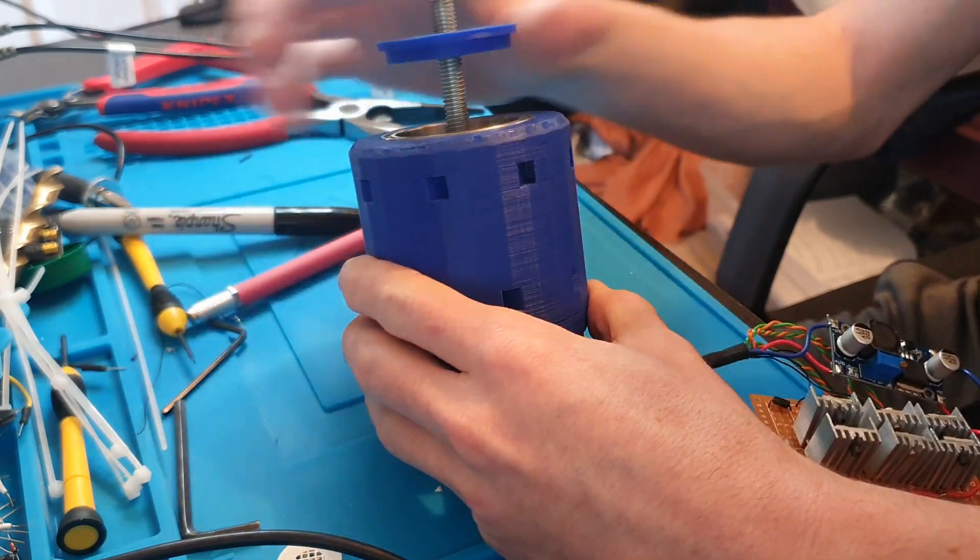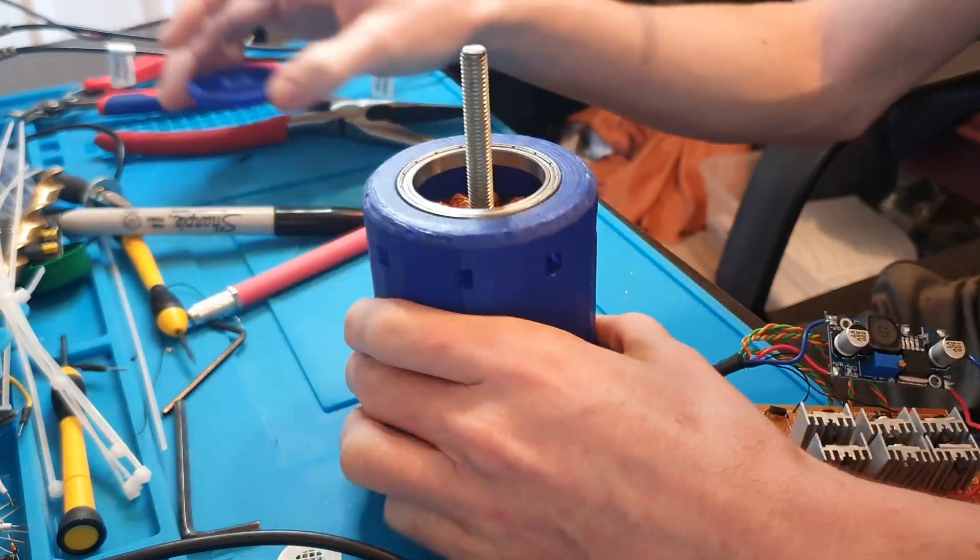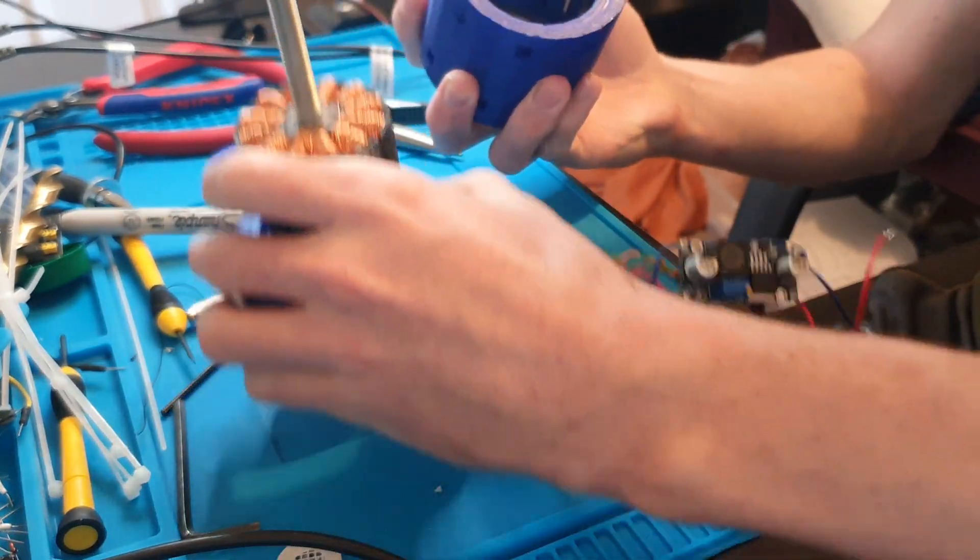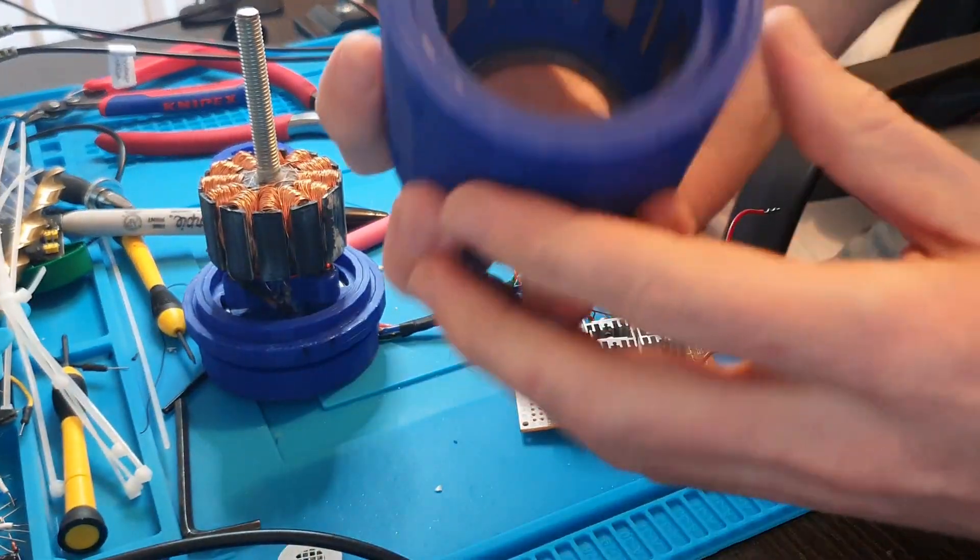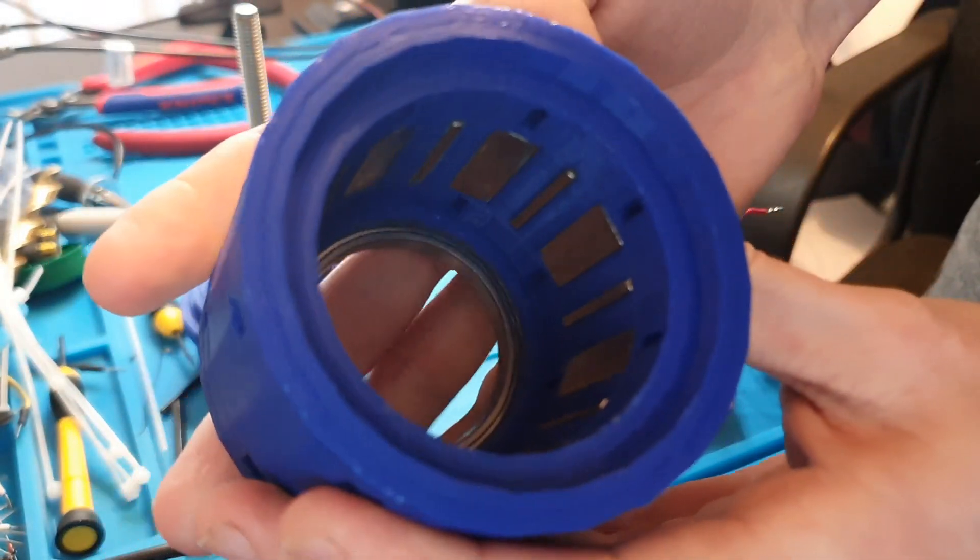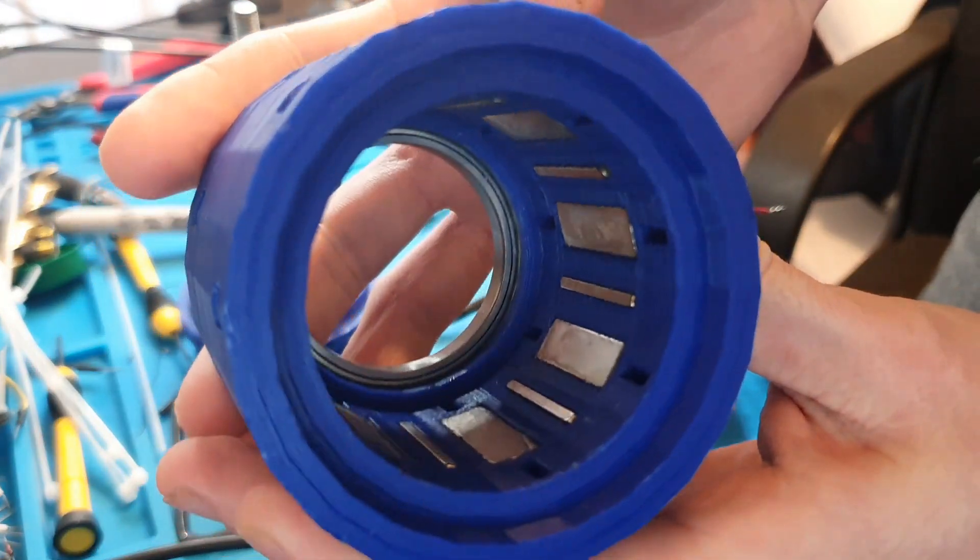So firstly, looking at the rotor, the rotor uses magnets arranged into a Hallbach array.